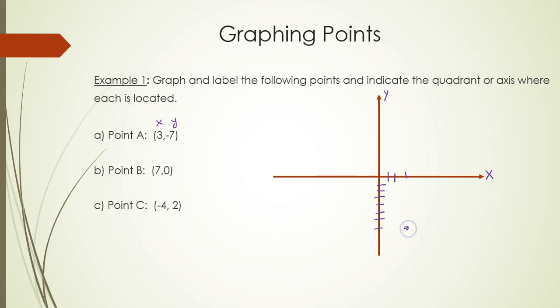And then we will go vertical movement will be down 7. So 3, negative 7, that is point A. That is located in quadrant 4.